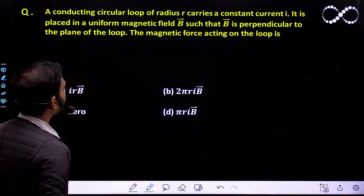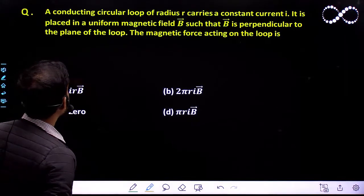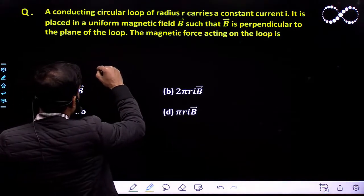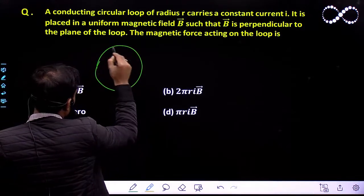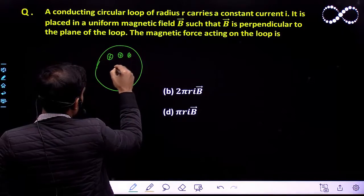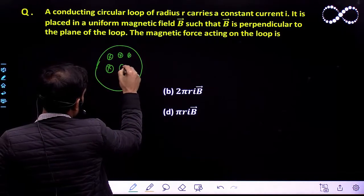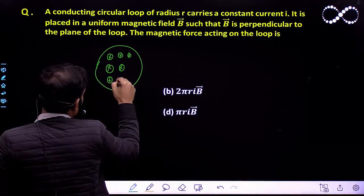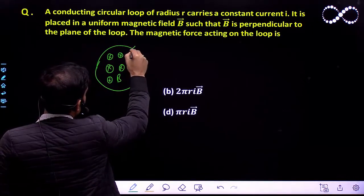So see, here it is uniform magnetic field, and it is a circular loop. So a circular loop is there and the magnetic field is uniform. Let us call the magnetic field into the plane of paper, and that is B, and the current is going in this direction.